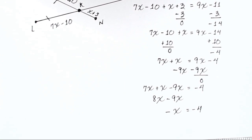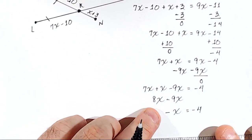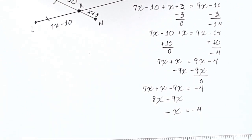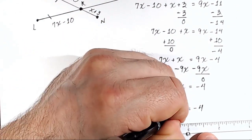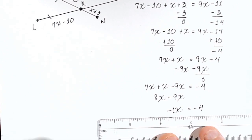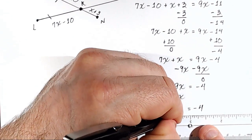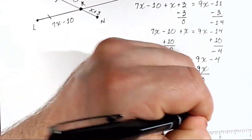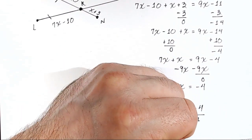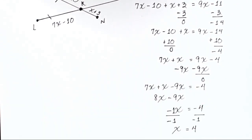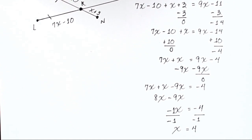To get rid of the negative sign, we divide both sides by negative 1. There's an implied 1 in front of that x. Negative 1x divided by negative 1 gives x, and negative 4 divided by negative 1 gives positive 4 — a negative divided by a negative is positive. So x equals 4.